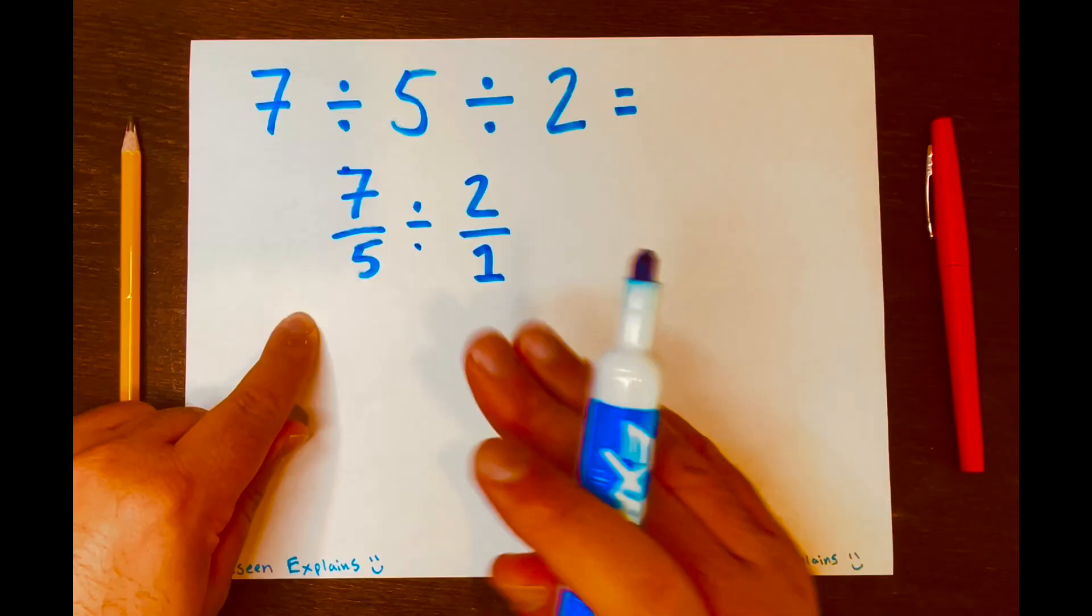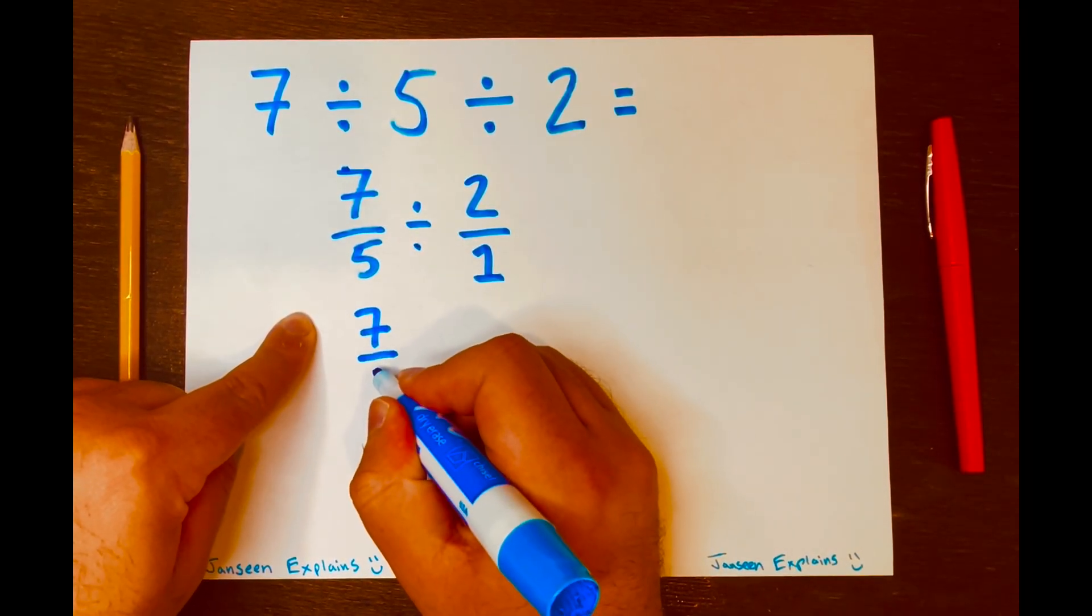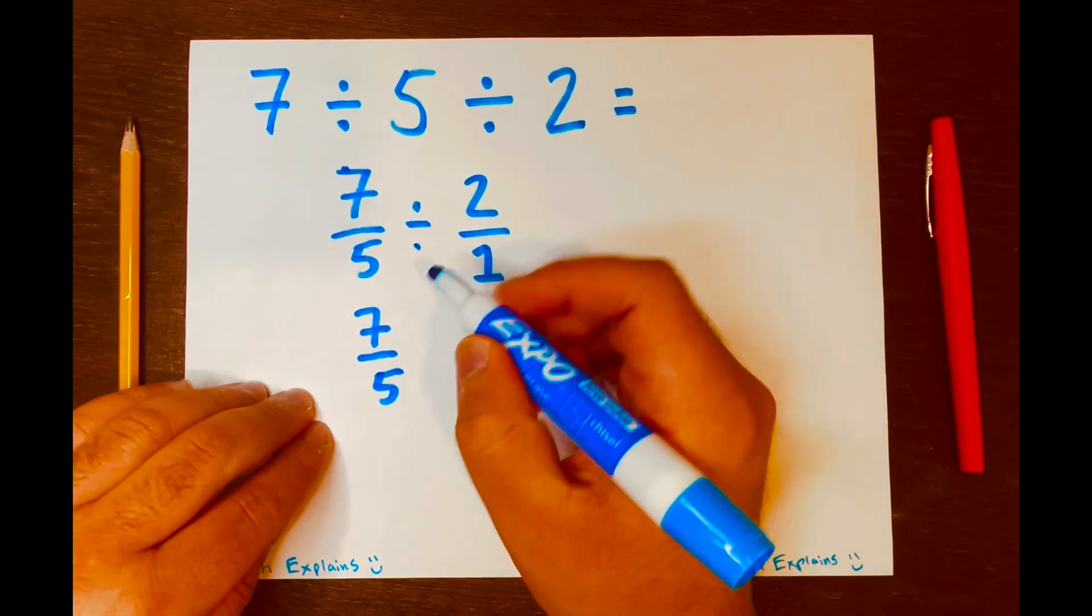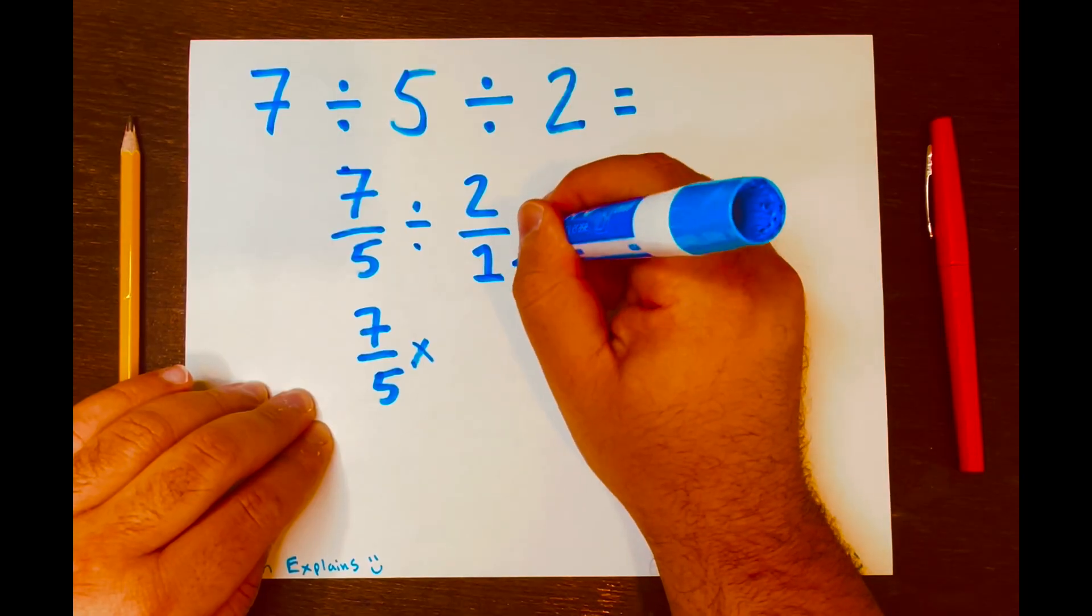And now let's use that method, keep, change, flip, where I'm going to keep the fraction 7 over 5. Change the division symbol to multiplication. And then lastly, flip this fraction.